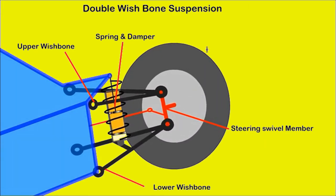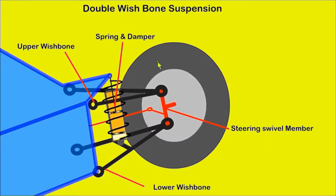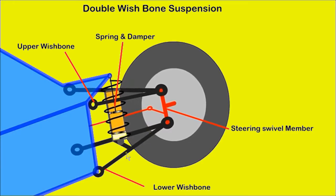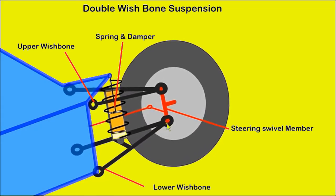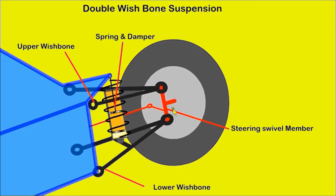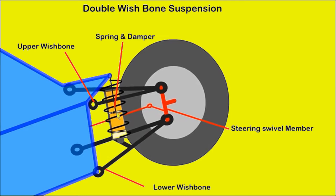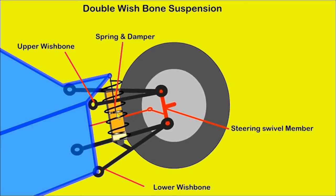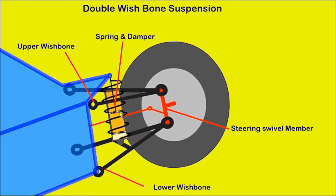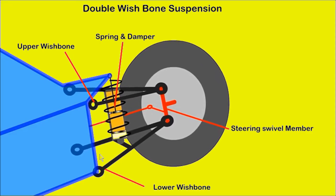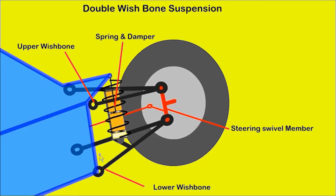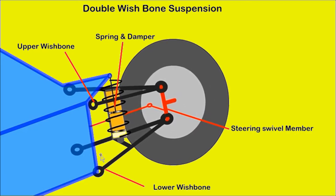A double wishbone suspension has two wishbone shaped links attached to the car at the wide end and the narrow end is connected to swivel members which have the stub axle and wheel. The spring and damper are located between the lower member and the car structure. In most cars, the wishbones are not of equal length or parallel. This system is expensive to manufacture but gives good stability to the wheel. They are often used in racing cars.